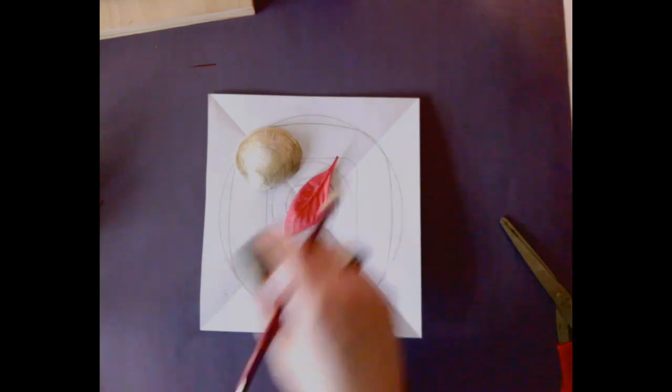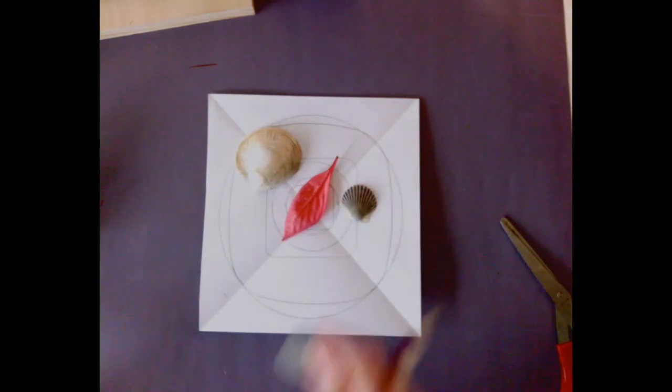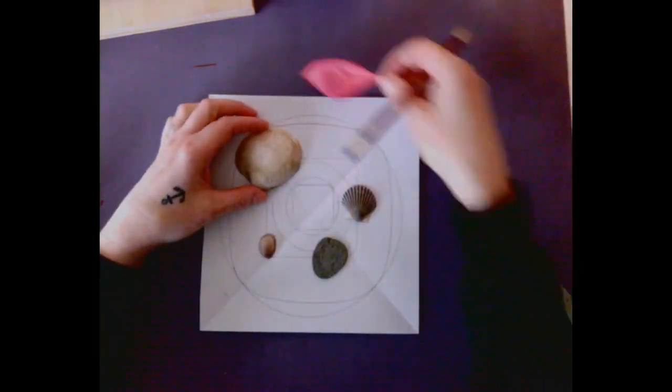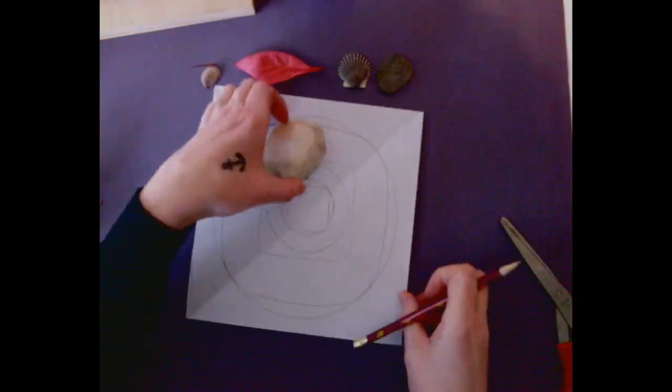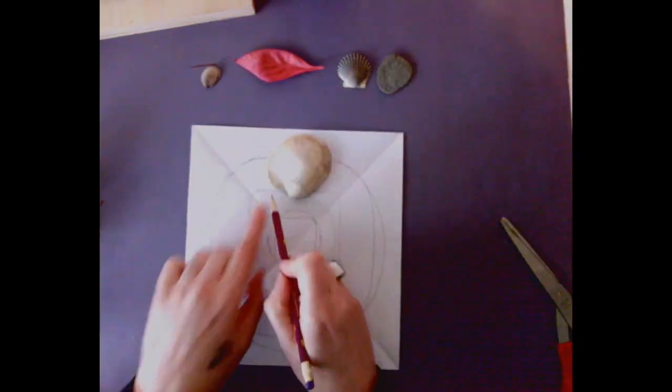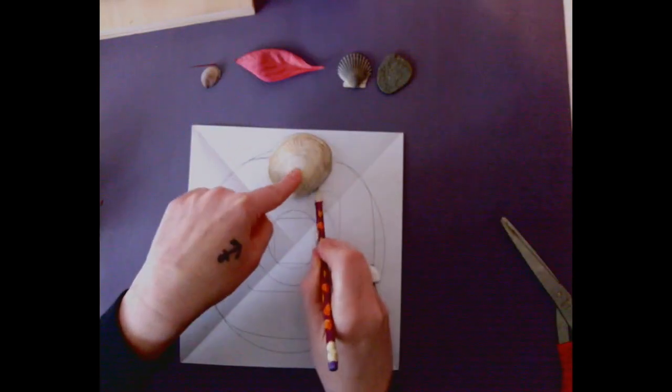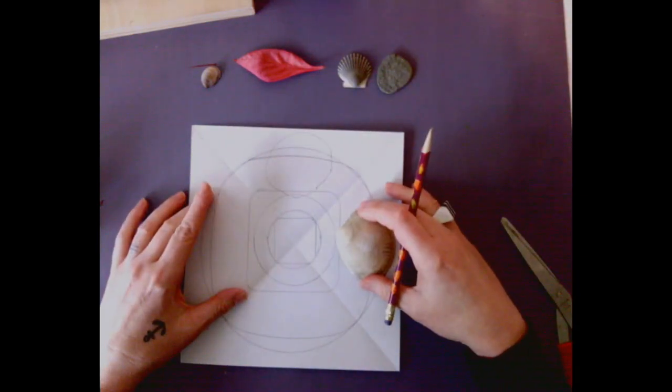I chose a shell, a leaf, another shell, a rock, and another shell. But you could use rocks, you could use flowers, you could use anything. If you don't have access to natural objects, you could use small objects that you find around the house.